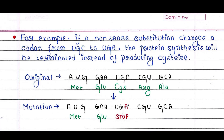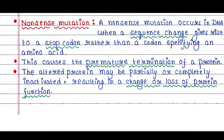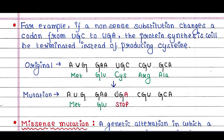This causes the protein to be terminated instead of producing a cysteine residue — in other words, it causes premature termination of a protein. The altered protein may be partially or completely inactivated, resulting in a change or loss of protein function. These types of small proteins are called truncated proteins.